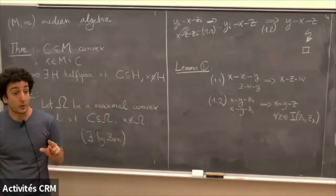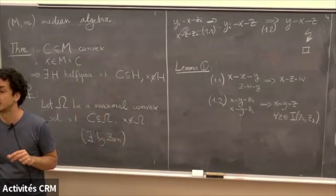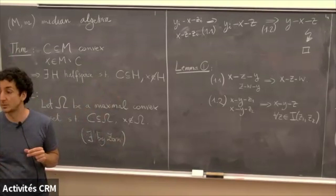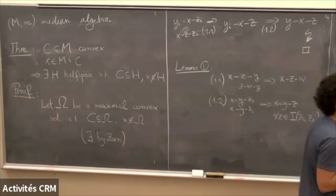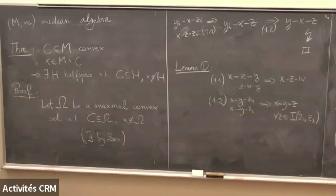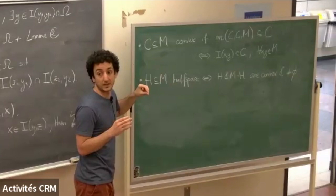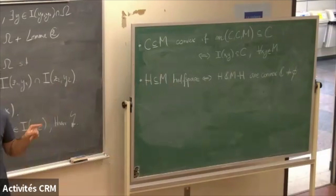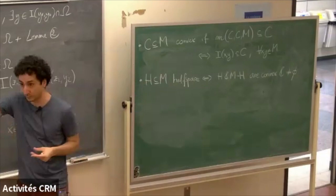Question: is there a half-space definition that encodes all the power? Yes — you could define a median algebra as a set with a ternary operator that is symmetric (the only identity you keep), define half spaces and convexity that way, then say any two points are separated by a half space, and show that's equivalent to a median algebra. The hard arrow is what we've just seen.